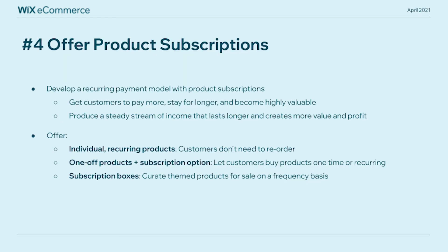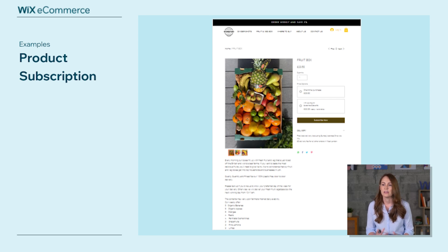One of the most effective ways of increasing customer lifetime value is by selling product subscriptions, because you're developing a recurring payment model. Customers pay more, stay for longer, they become highly valuable, and you're producing a steady stream of income. You could offer individual recurring products, one-off products with a subscription option, or curated themed subscription boxes. Ginger Planet, which sells fresh fruits, vegetables and juices, offers their fruit box as either a single purchase or a weekly subscription — a smart way to let customers increase their frequency over time.